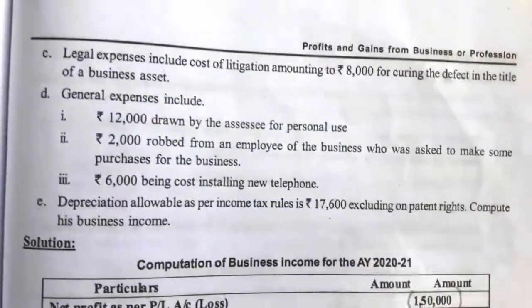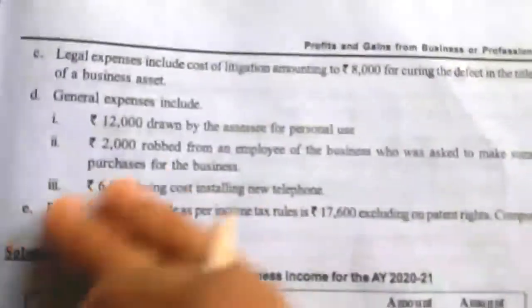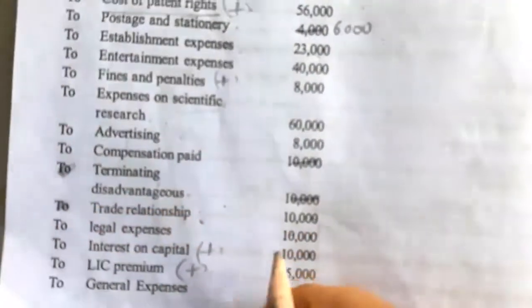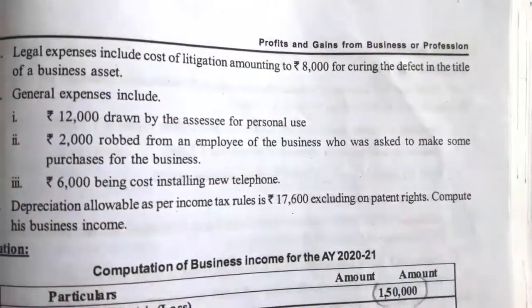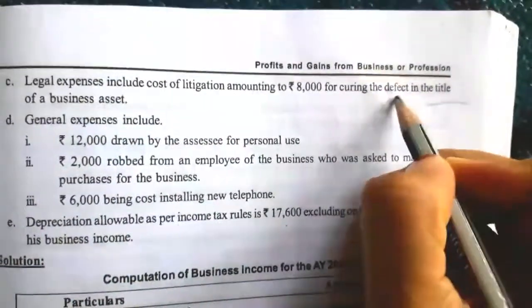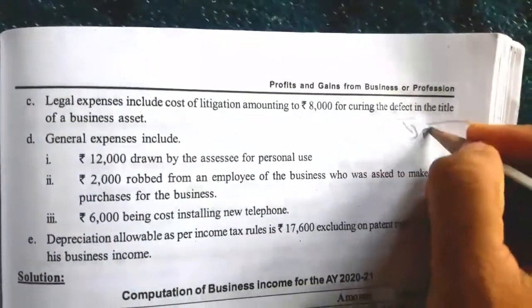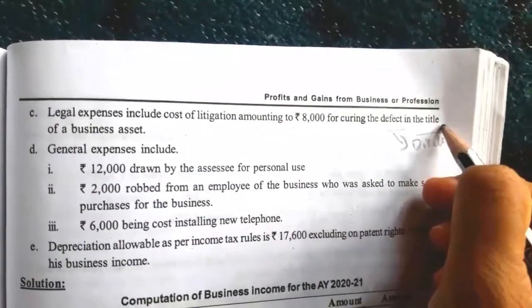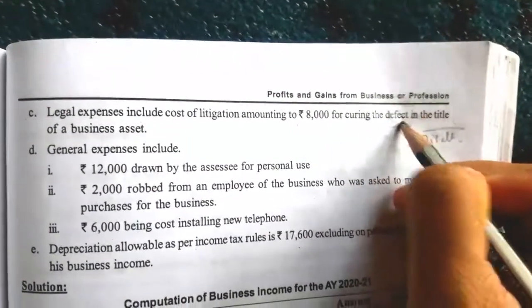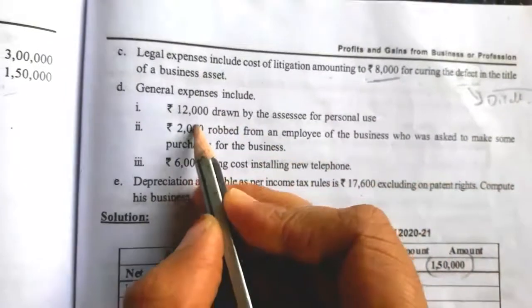Legal expenses include cost of litigation amounting to rupees 8,000 for curing the defect in the title of a business asset. On the debit side, legal expenses are given as rupees 10,000. Within that, 8,000 relates to curing a defect in the title of a business asset — this is taken as a disallowed business expense. Any legal expenses incurred for the title of a business asset are allowed, but expenses for curing a defect in the title are disallowed.